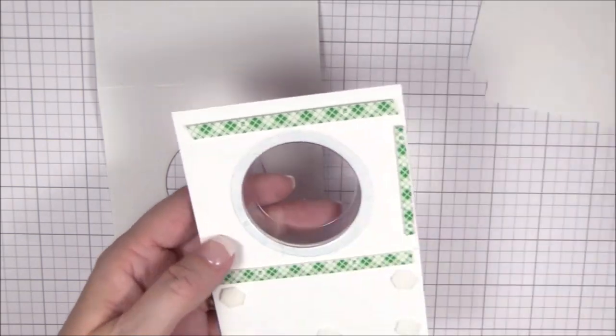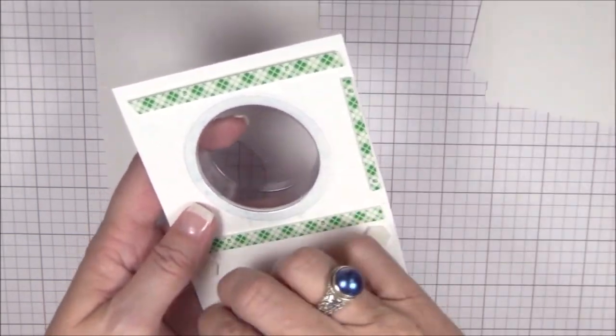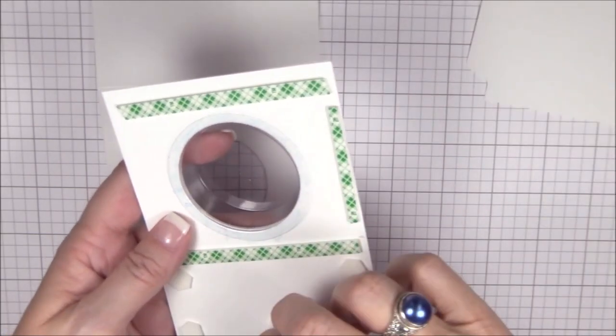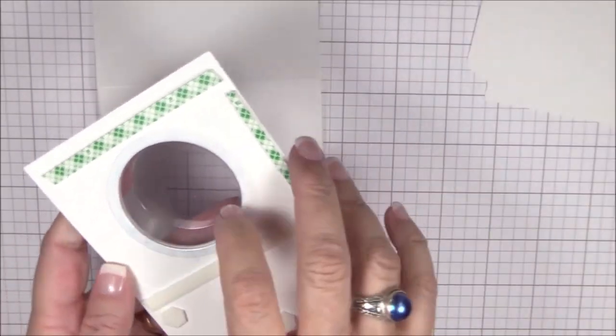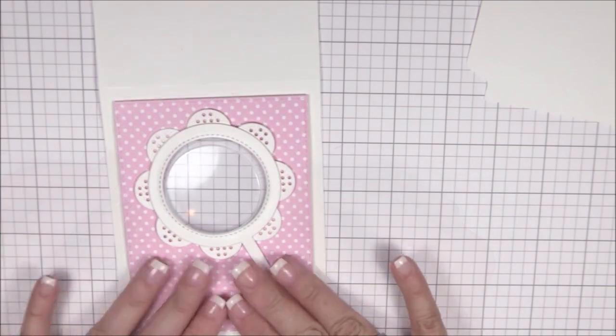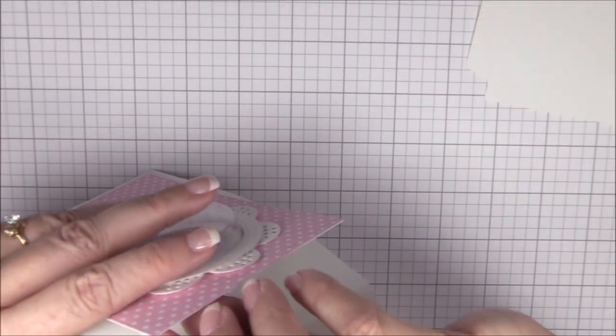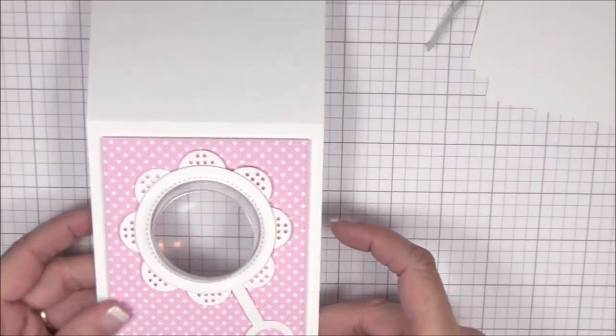Now it's time to assemble the card. I've added some foam squares to the back of the polka dot panel, and I'll adhere it to the card base, making sure to align the apertures. Notice that I didn't remove the release paper from the upper foam tape. This will allow me to position the panel onto the card base with a little bit of wiggle room. Once I have it where I want it, I can remove that second strip of release paper to completely secure it down.